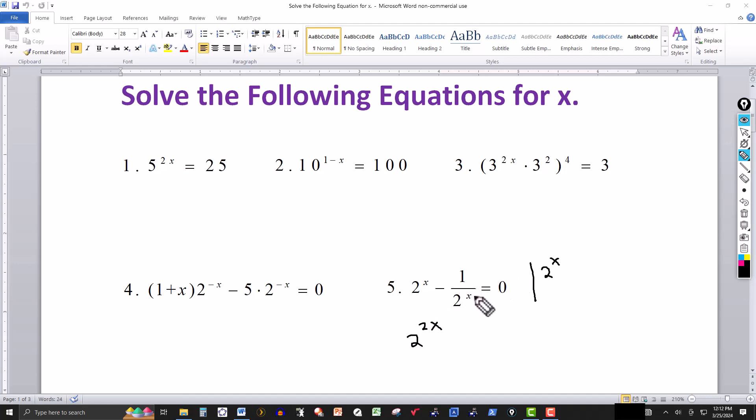And when I multiply the second term here on the left side, the 2 to the x cancels, this is minus 1. And the right side, 0 times 2 to the x is 0. So I get 2 to the 2x. Let's bring the minus 1 over, adding 1 to both sides here, I get a 1.